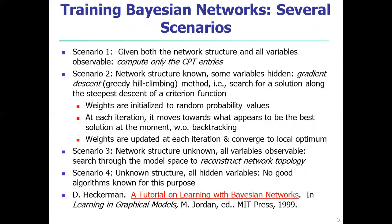How to train a Bayesian network? There are four scenarios followed by the Bayesian network. Scenario one will compute only the CPT entries. Scenario two will work on the known network structure. Scenario three will work on the network structure with unknown variable values. Scenario four will work on unknown network structure with all hidden variables.